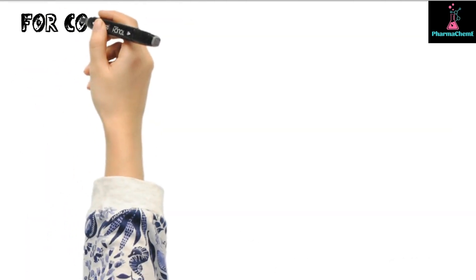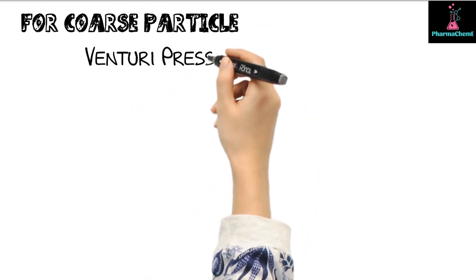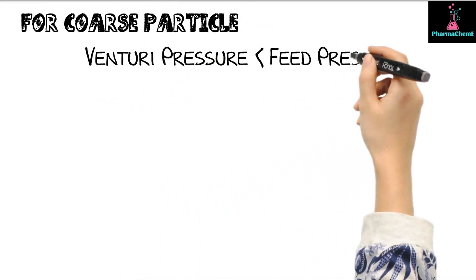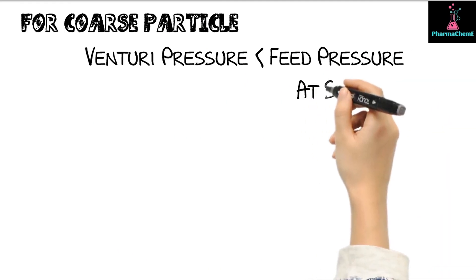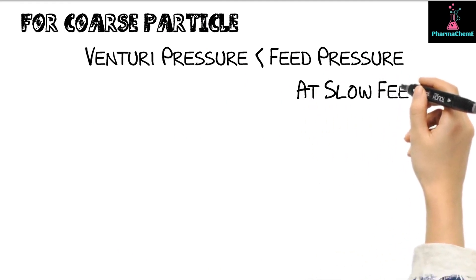To produce coarse particles, it's crucial to maintain a lower venturi pressure relative to the feed pressure, especially at a slow feed rate. This gentle gas jet minimizes particle shattering.